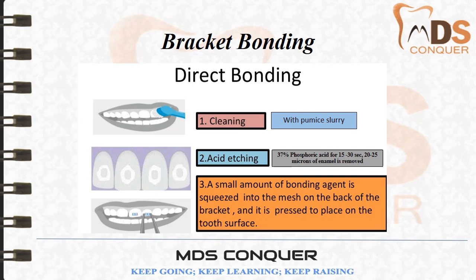Bracket bonding can be done either by direct or indirect bonding. For direct bonding, the first step is cleaning the labial surface with pumice slurry solution. After cleaning and moisture control, the next step is acid etching — 37% phosphoric acid is used for 15 to 30 seconds, after which 20 to 25 microns of enamel is removed.